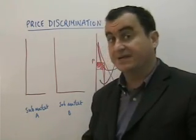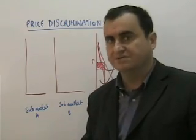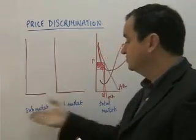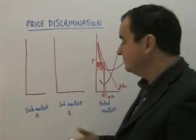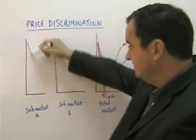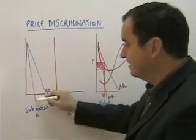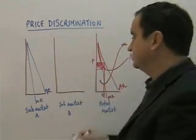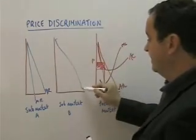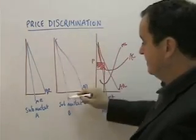Let's show that the profit can be raised if they price discriminate. Imagine two sub-markets, A and B. In sub-market A, there will be a demand curve, an AR curve, and a corresponding MR curve. Likewise in sub-market B, AR, MR.